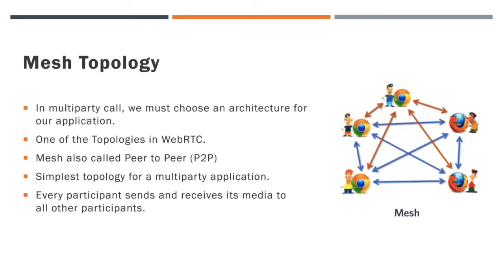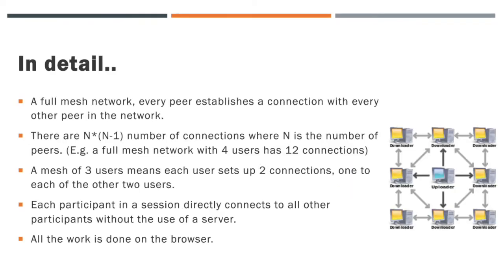We already know that WebRTC is not only about communicating in peer-to-peer — it can also be used to make a multi-party or conference call. When dealing with a multi-party call, we must use a topology for our application. The most common topology is called a mesh, where every peer in the network sends their data to the rest of the peers. In a full mesh network, every peer establishes a connection with every other peer in the network.